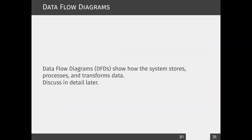That covers business process models. The next diagram type is data flow diagrams (DFDs), which show how systems use different processes and how data is transmitted between them. This will be discussed separately in a later session.